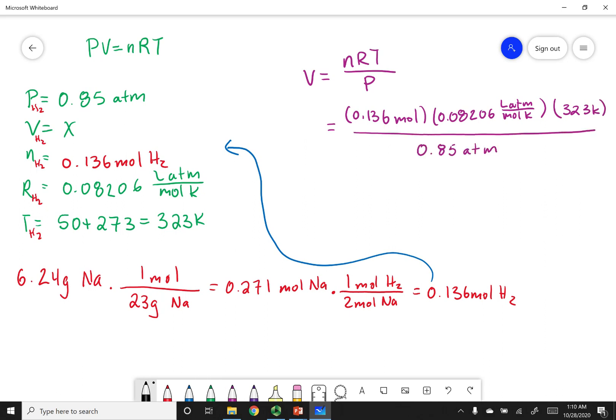You'll notice that all the units will cancel out. Moles cancels out with moles, Kelvin with Kelvin, ATM with ATM, and I am left with liters, which is what we measure volume in. Doing the calculation out, I get 4.24 liters as my volume.